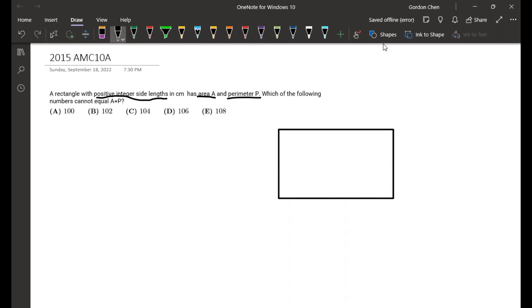So we have the area is A, and the perimeter is P. We want to find what's not possible for the sum of the area and the perimeter, so we want to add them.